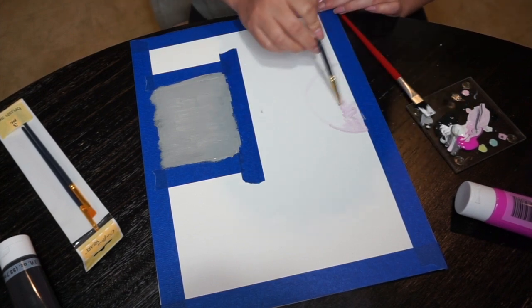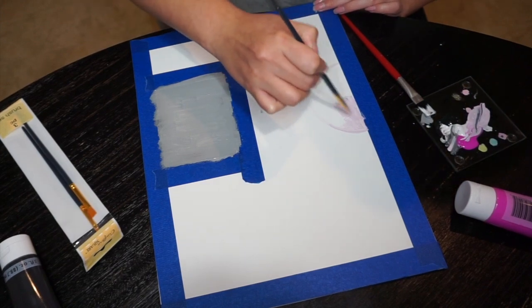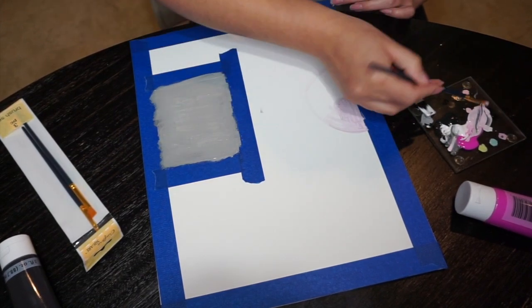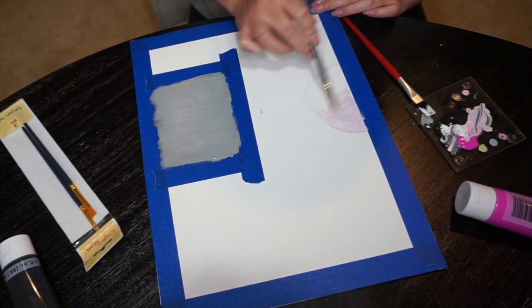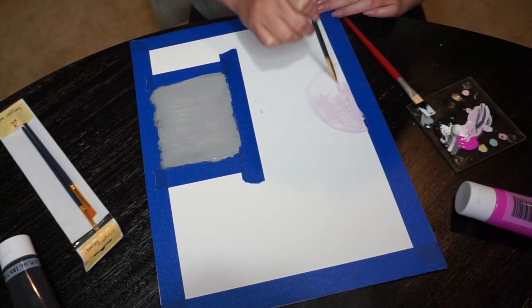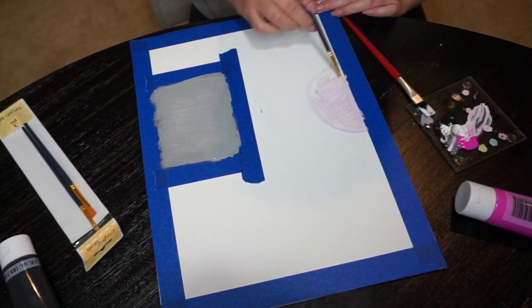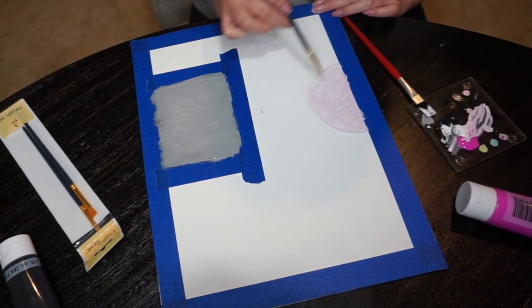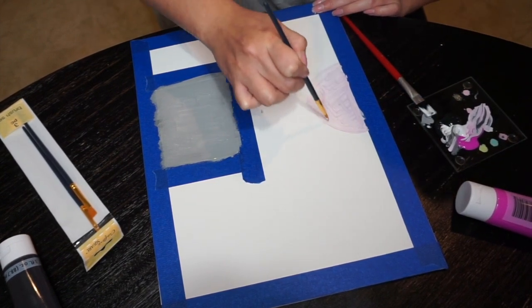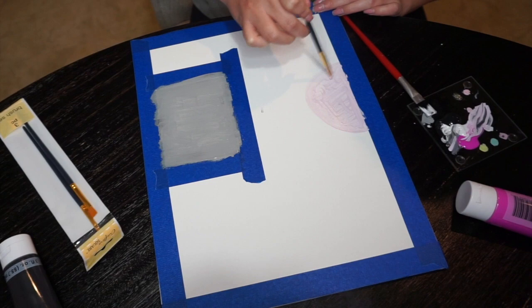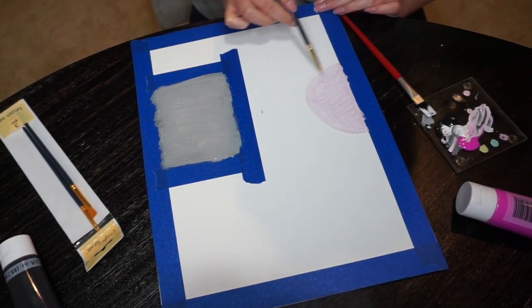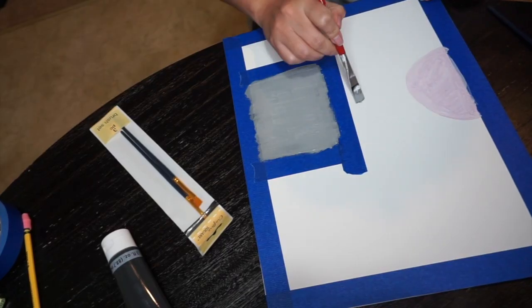So I am just filling in my half circle here. You want to make sure to do a nice thick layer of paint because once it dries, a lot of it is going to be saturated. Basically it's going to settle down. It's going to dry really really quick, so I did leave this overnight to dry.